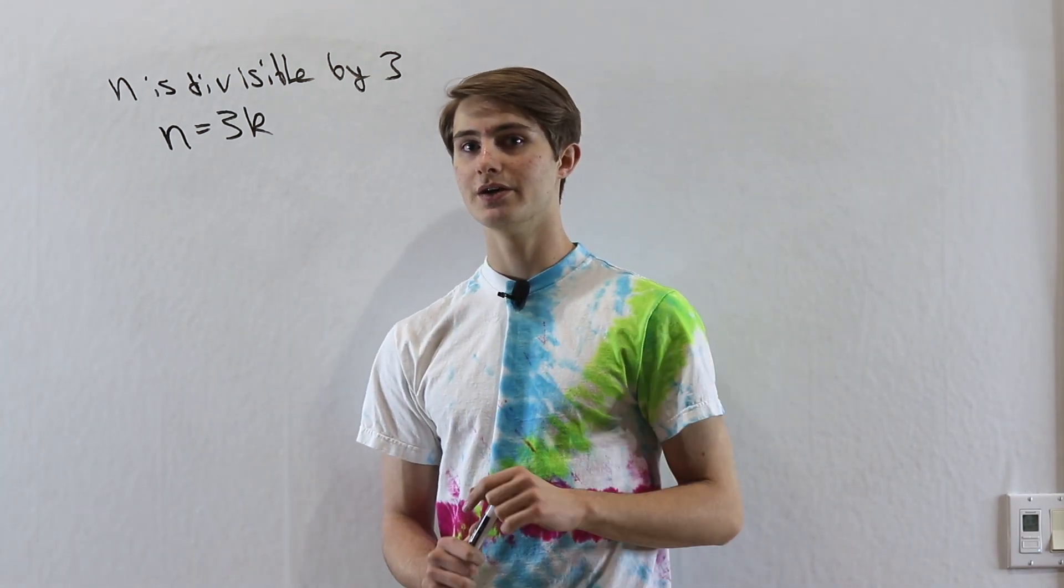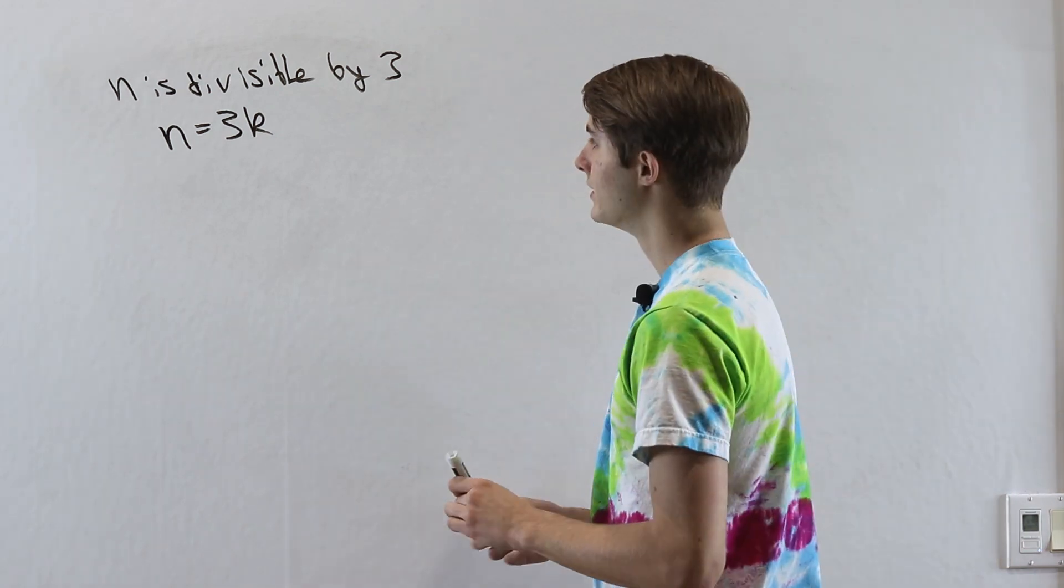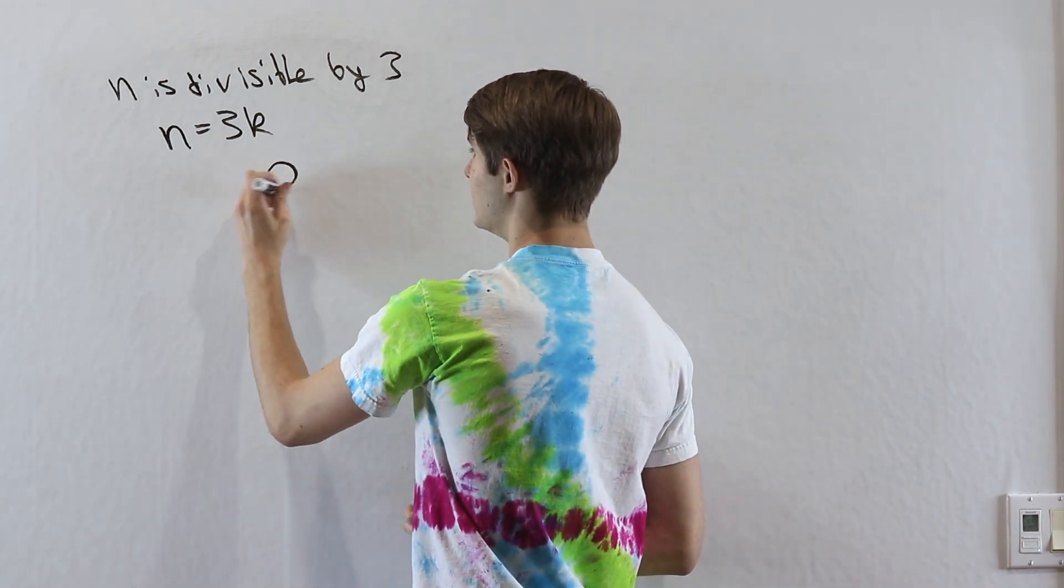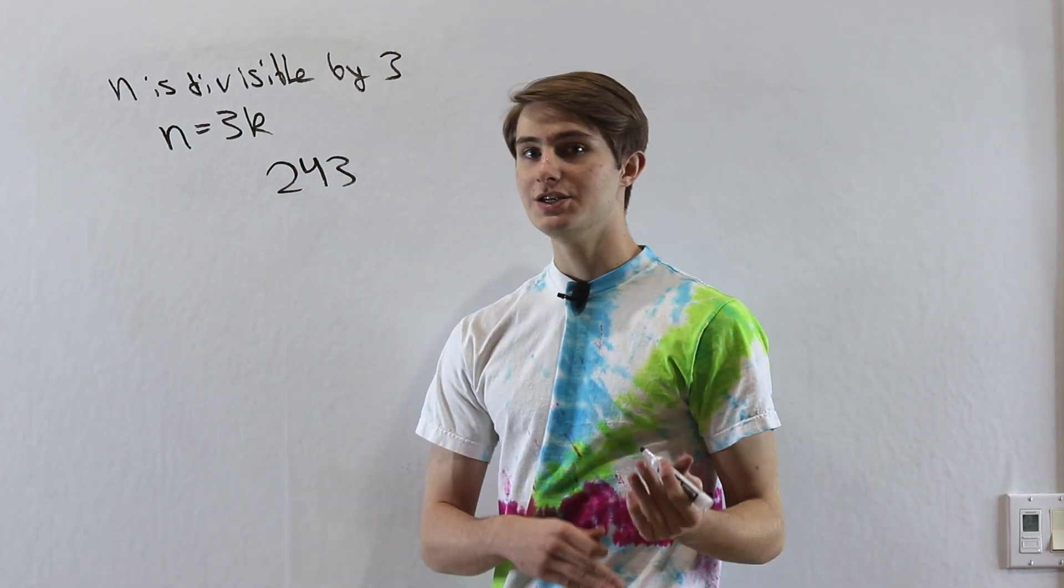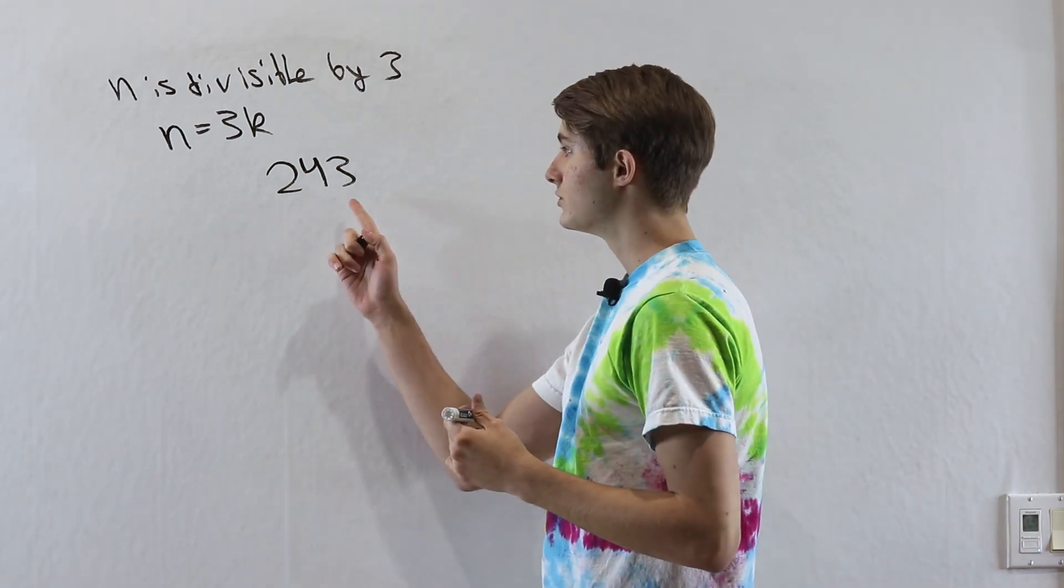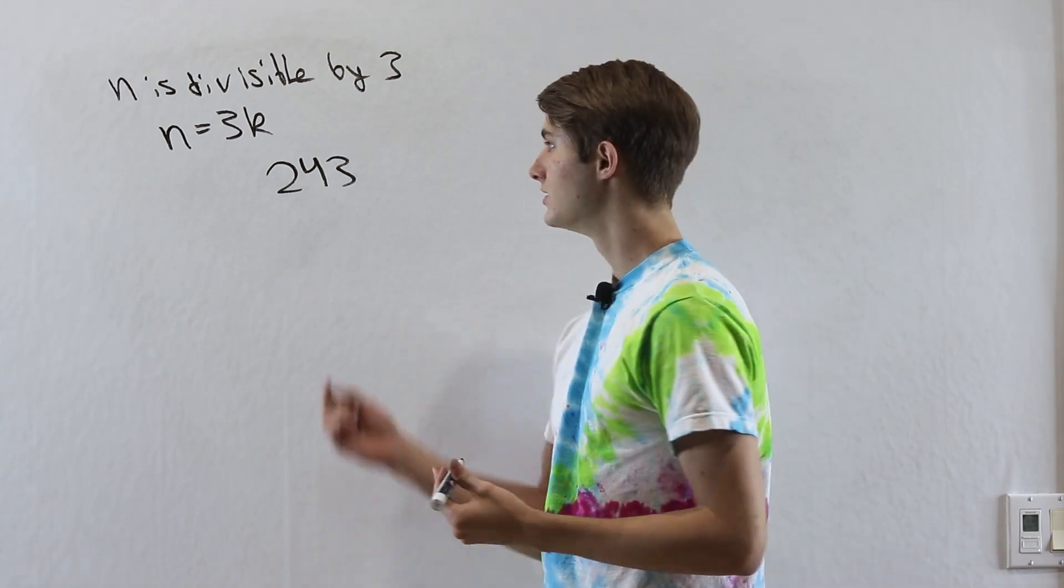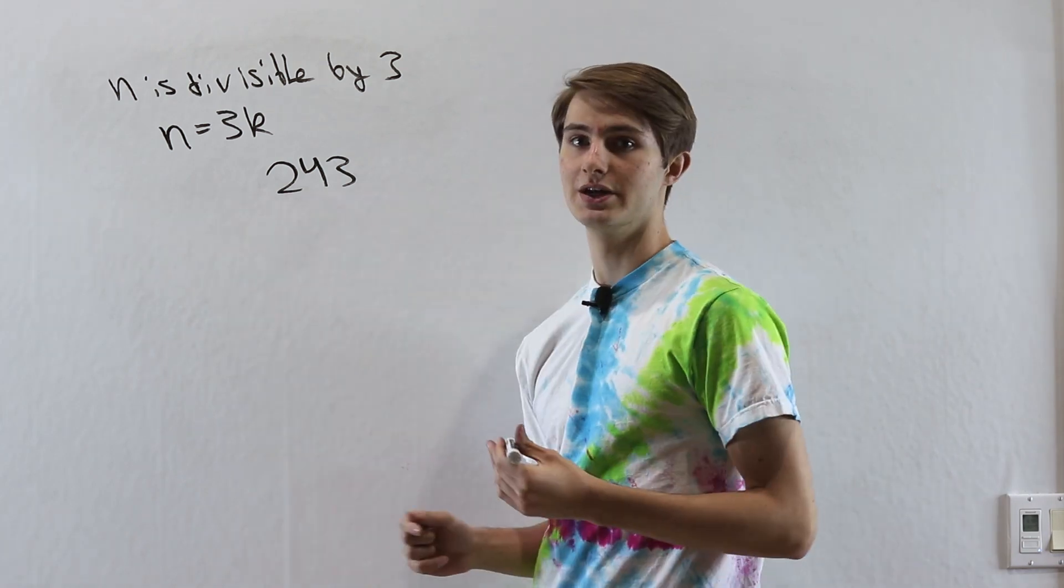Now we want to take a look at what numbers actually are. Let's say we wanted to look at 243. When we look at the digits of a number, we know that each of those represents a place: the ones place, tens place, and the hundreds place.